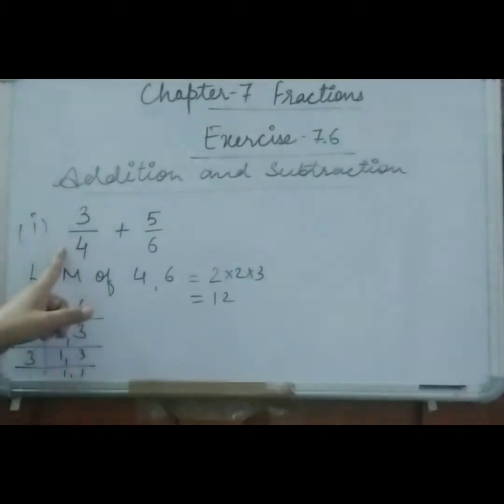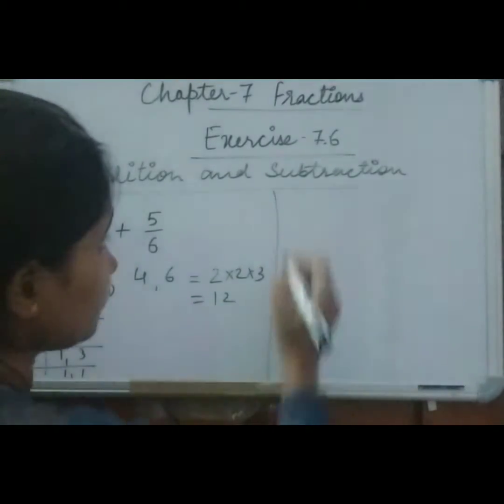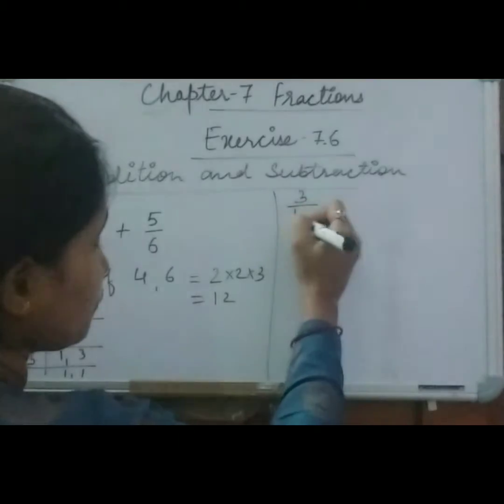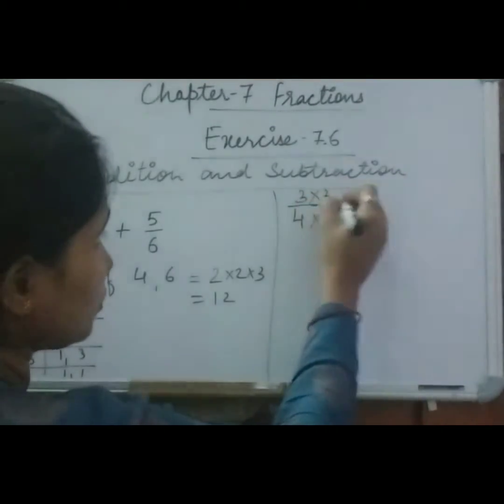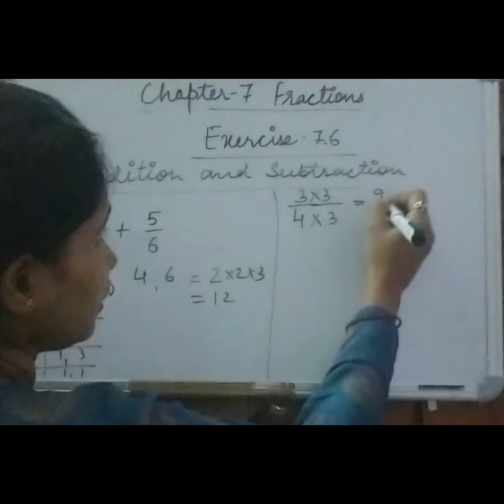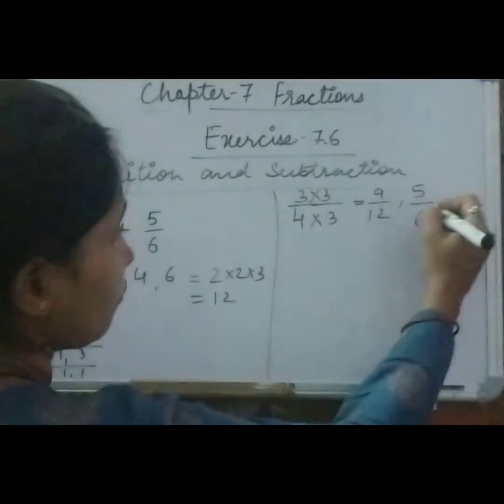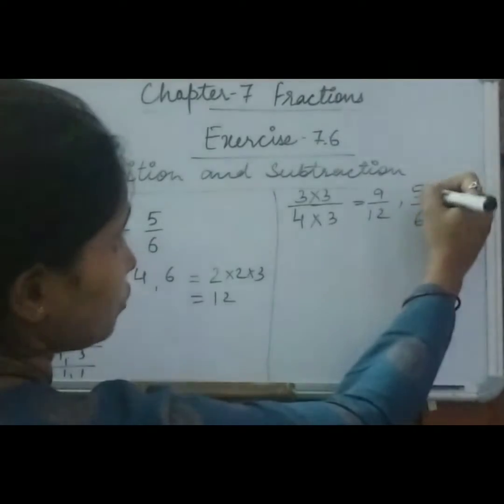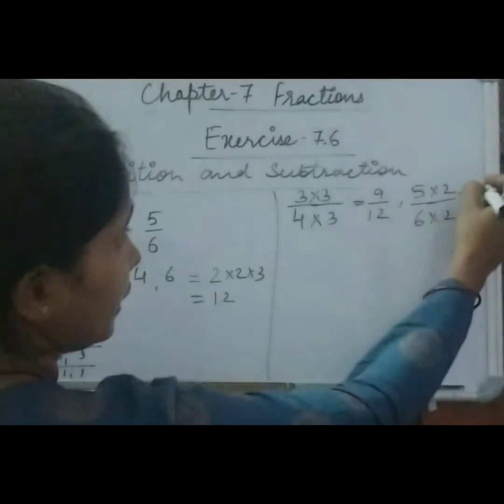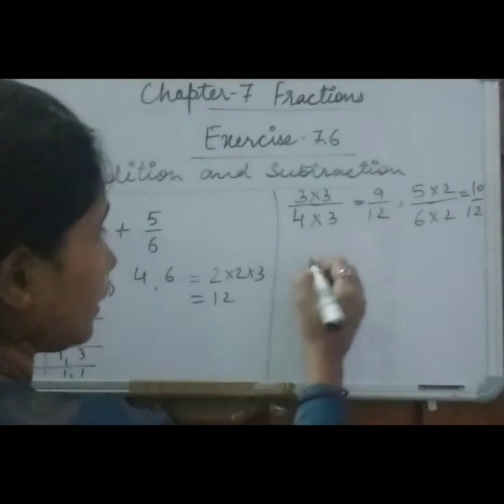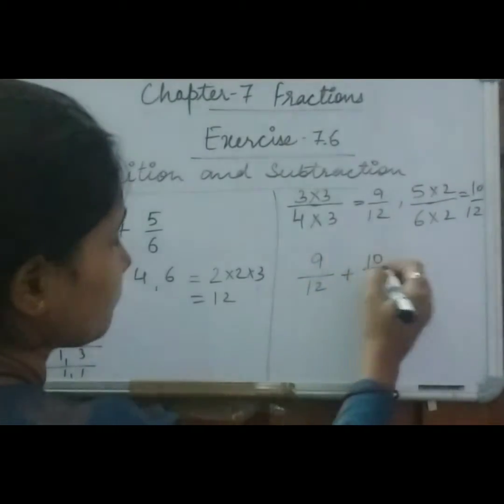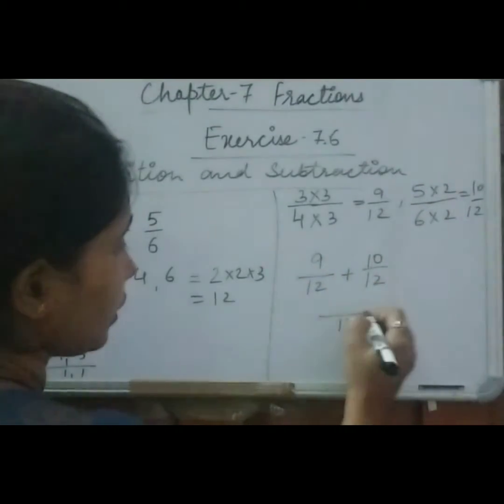So we will make this one also 12 and this one also 12. To make 3 by 4 as 12, this 4 we will make 12 how? By multiplying it with 3. So 3 times 3 is 9 and 4 times 3 is 12. And this one 5 into 6, 6 times 2 is 12, 5 times 2 is 10, 10 upon 12. Now we have to add them.